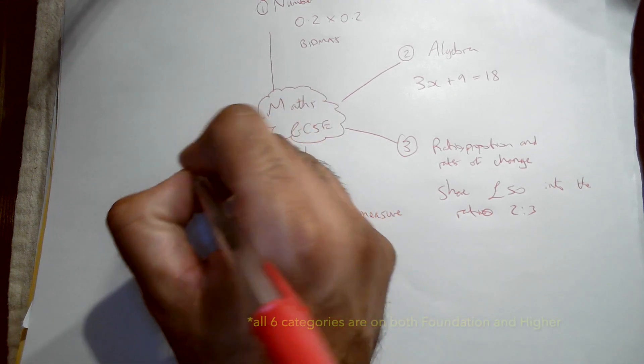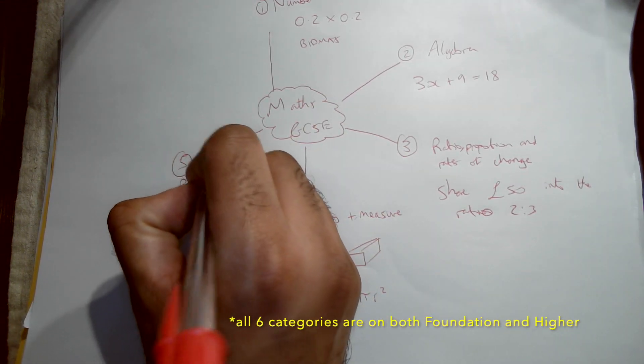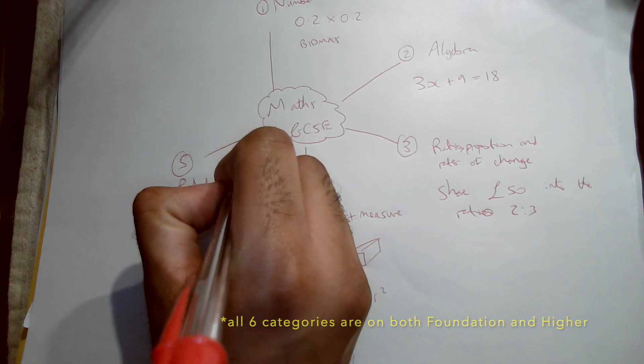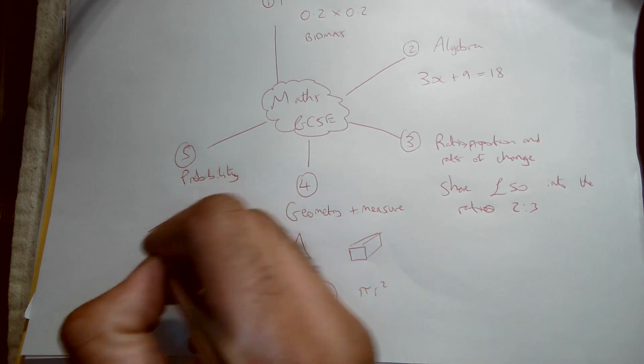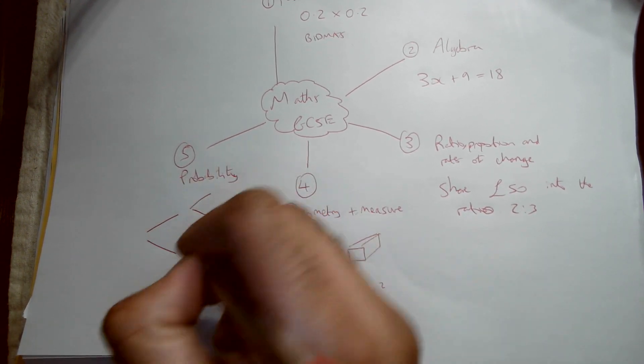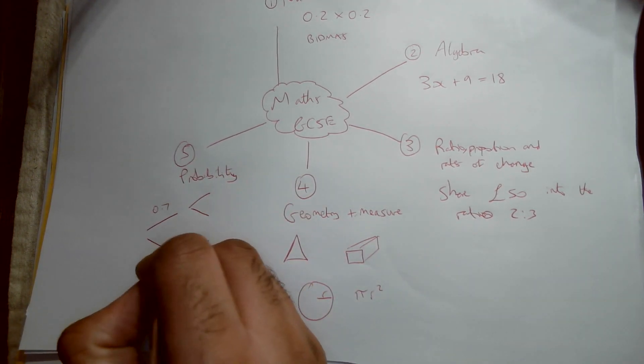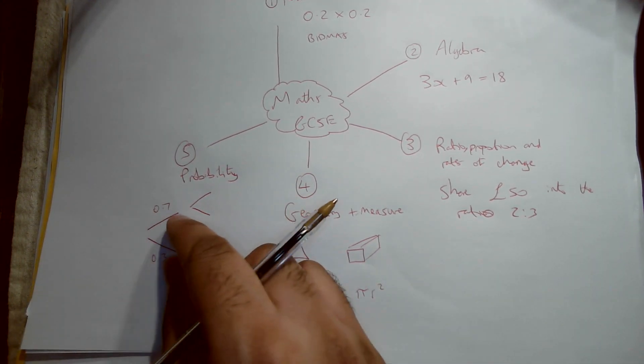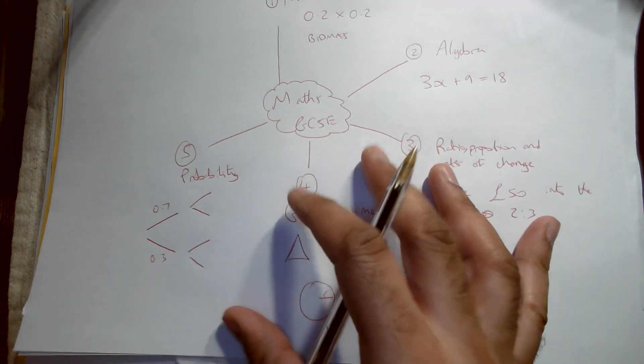The fifth one is probability. And just to give you an example, it might be something like tree diagrams. I'm not going to fill one in, but things that look like that, and it usually has something like this: 0.7, 0.3. So both branches have to add up to one because all probabilities add up to one.